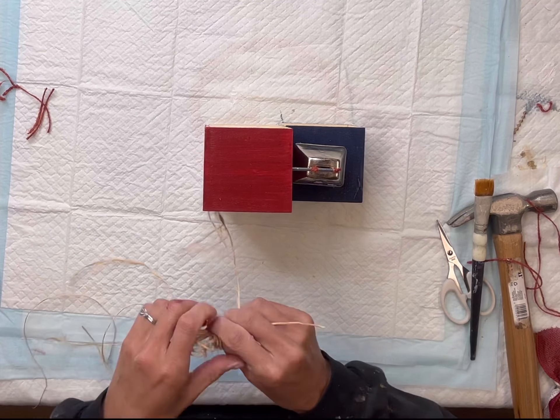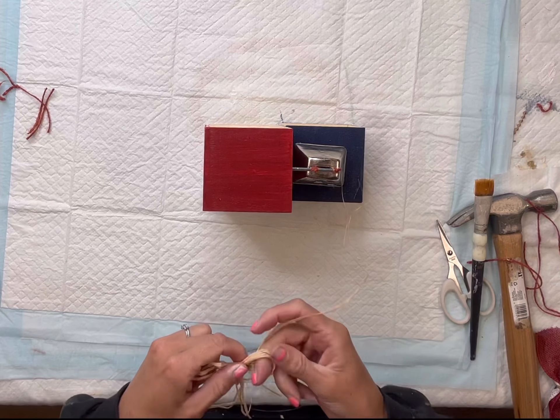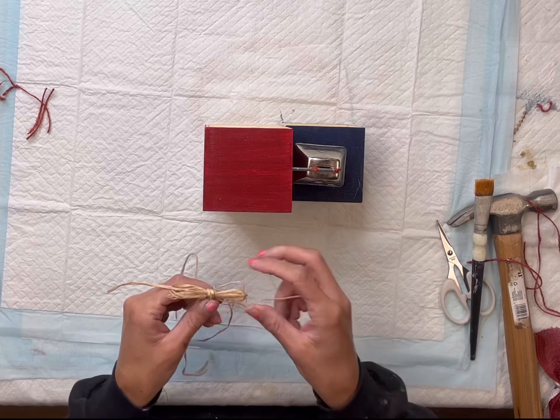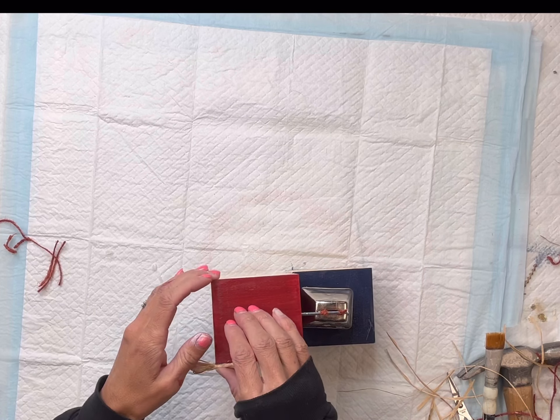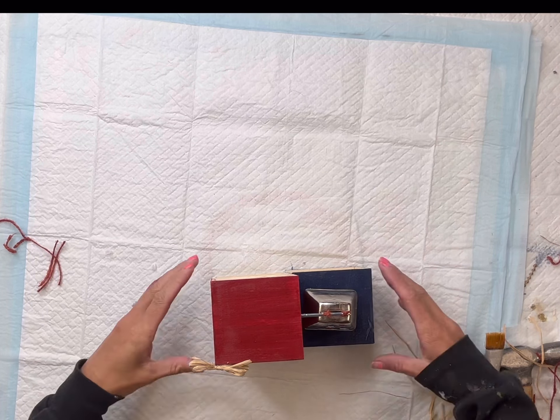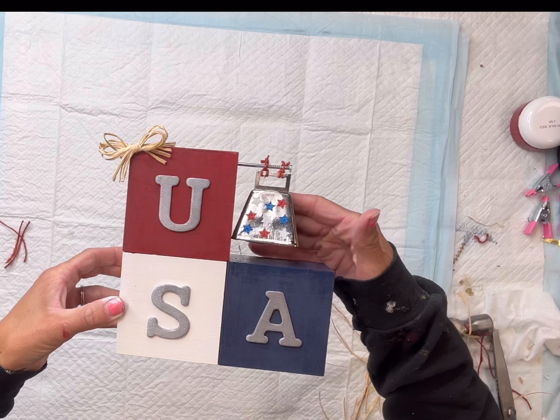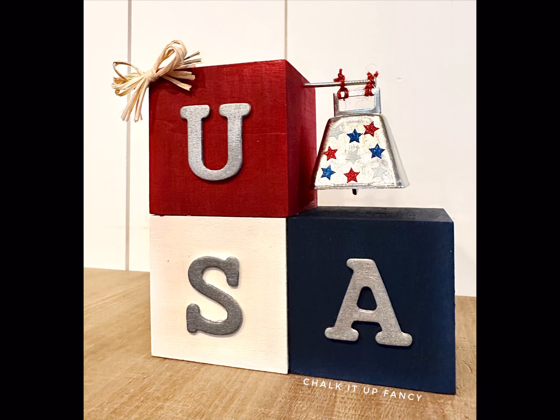Then as a last minute thought, I made a little raffia bow for the top corner of the red cube. And I did rub the salve off in that area because it will not adhere well. So I added the hot glue. And then there you go. Now we have this really cute USA shelf sitter.